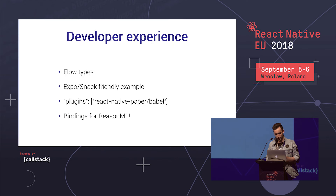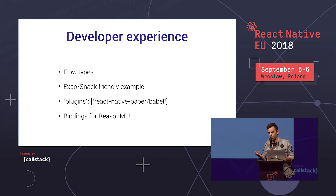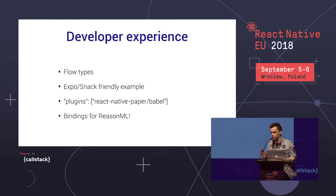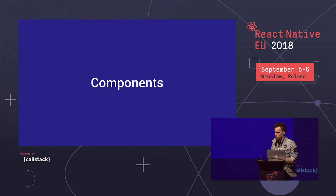Last but not least, we have great developer experience — and I say that not just because we built it. We use Flow types, and we have an Expo and Snack-friendly example. You can go to our documentation, which is auto-generated from Flow types, and on every component page there's a 'Try it on Snack' link that loads the component into Snack so you can try it right away. We also have a Babel plugin for React Native Paper so if you only need a couple of components, it removes unused ones from the bundle to keep bundle size smaller. And we have ReasonML bindings usable with ReWeb and ReWeb Navigation.